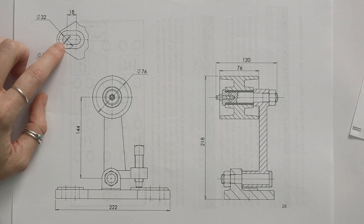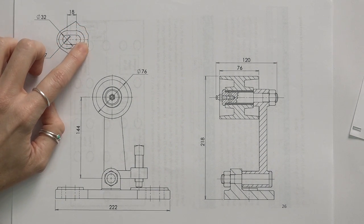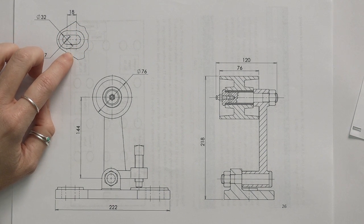In this specific case, they've drawn an auxiliary or a partial view here to indicate the detail of the slot. This was not explicitly asked, but because the slot will be part of the mounting dimensions, that will need to be drawn. But we'll get to that in a moment.